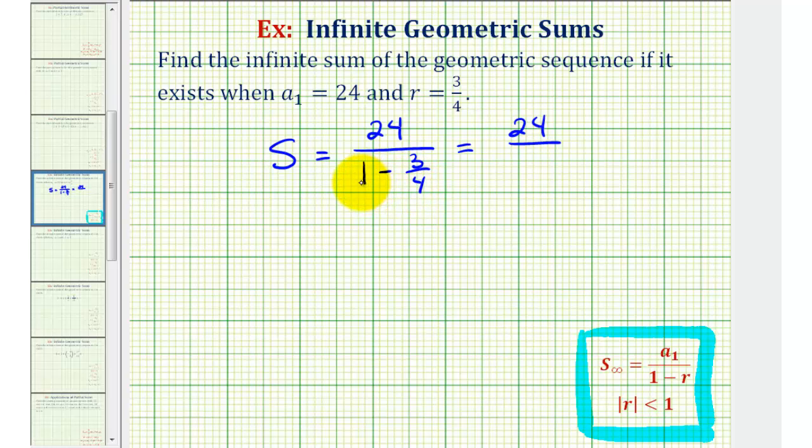Well, one is equal to four-fourths. So four-fourths minus three-fourths is one-fourth. Well, 24 divided by one-fourth is the same as 24 times the reciprocal of one-fourth, which would be four over one, or just four. 24 times four is equal to 96. So our infinite sum is equal to 96.